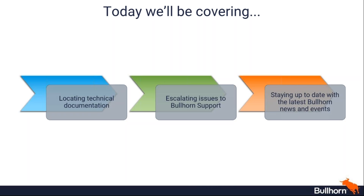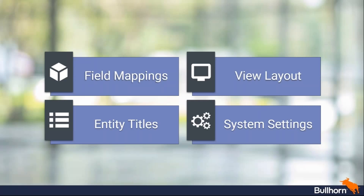Let's jump right in. To help us understand how this can be helpful and how it's different from what we've had before, I want to start with a little story. I've been fantastically promoted recently — I was a recruiter who just used Bullhorn, but now I've been promoted to a Bullhorn administrator. I'm really enthusiastic about using Bullhorn every single day, and now my team has turned to me and said they want me to manage our Bullhorn. That involves working with things like field mappings, view layout, entity title, and system settings — things that I as a standard user am sort of aware of on the sides but don't necessarily know how to work with.